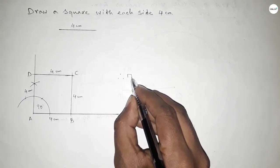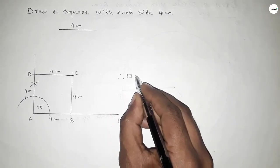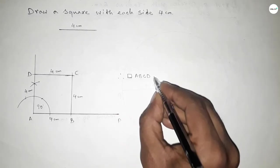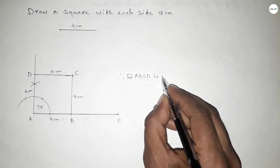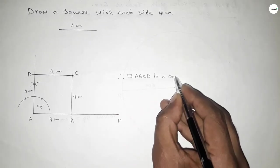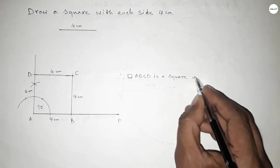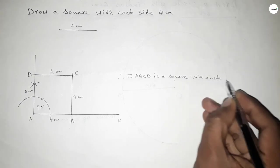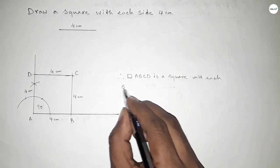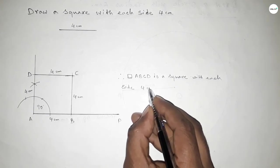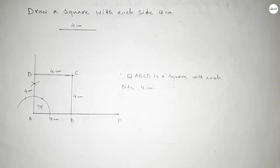Therefore, rectangle ABCD is a square with each side 4 cm. This is the process to construct a square with each side 4 cm.